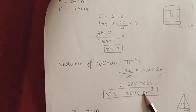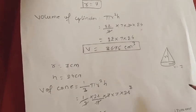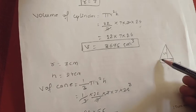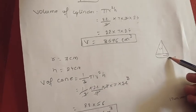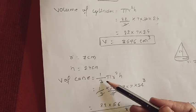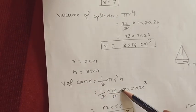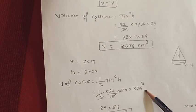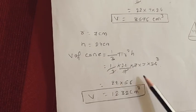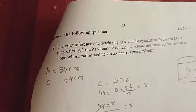Now also find the volume and curved surface area of the cone. The radius and height of the cone are the same as the cylinder: r equals 7 cm and h equals 24 cm. Volume of cone formula is 1/3 × πr²h — that is 1/3 × 22/7 × 7 × 7 × 24. Solve this to get the volume of the cone.